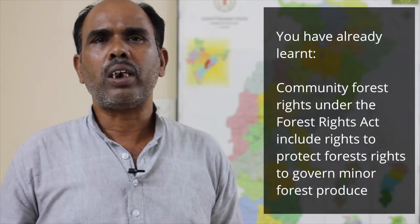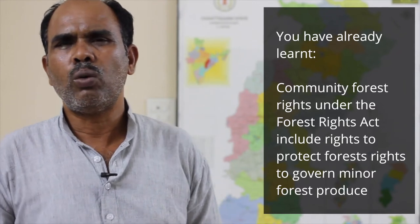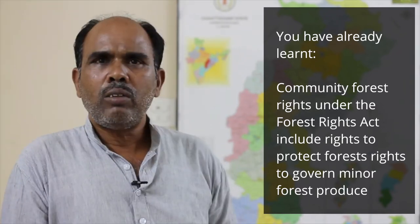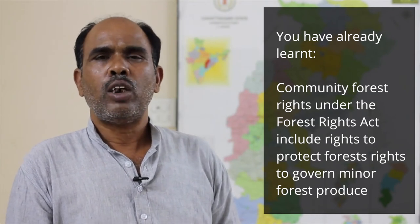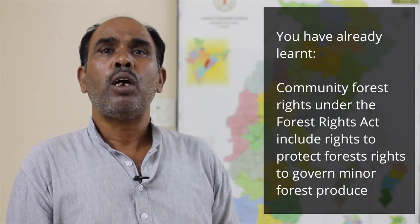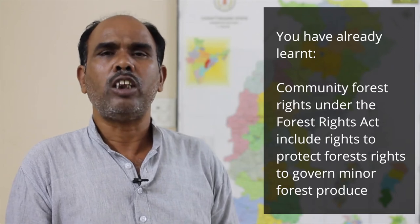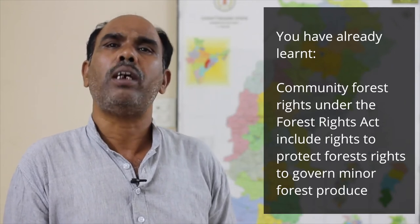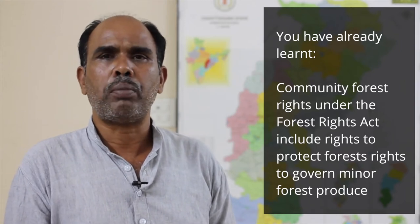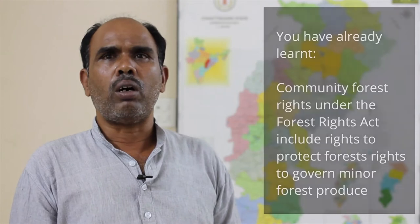The Forest Rights Act has a provision: under Section 3, subsection 1, clause I, the management of forests is enshrined through Gram Sabhas. It is very much possible within sanctuaries and national parks to bring forests and Adivasis closer together. Section 3, subsection 1, clause C provides for their rights to own, access, collect, use and dispose of minor forest produce. In this area, the collection of minor forest produce has been prohibited since 2003.